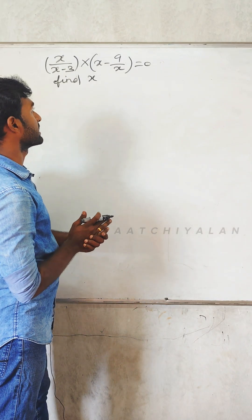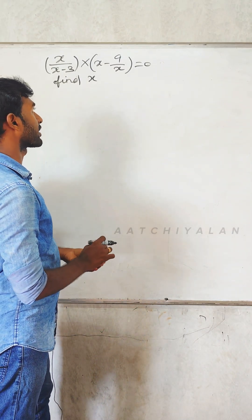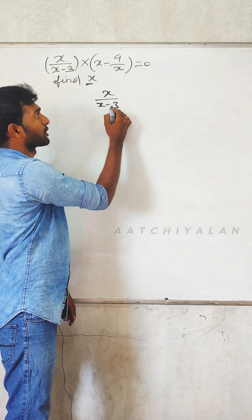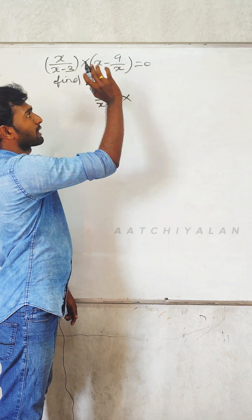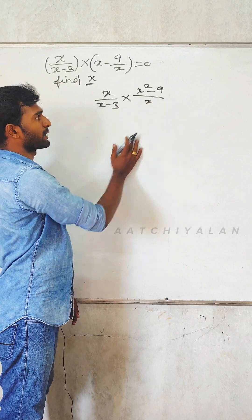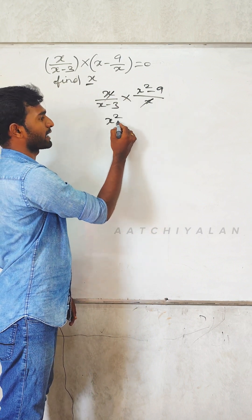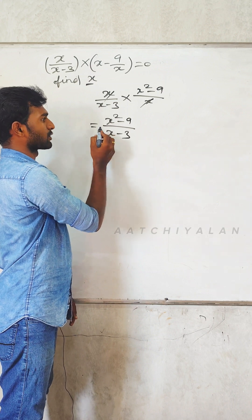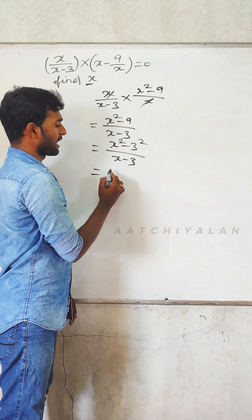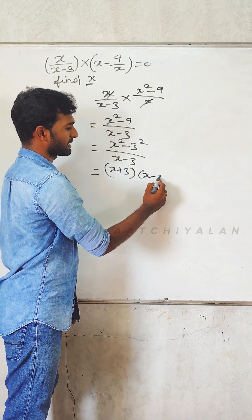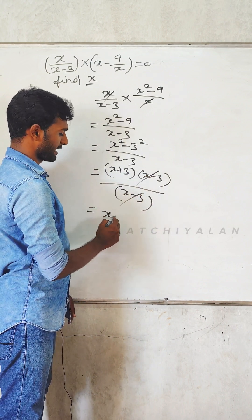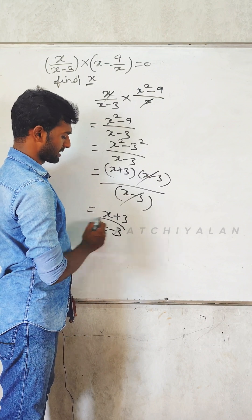x by (x minus 3) into (x minus 9) by x is equal to 0. Find x. x by x is equal to 0. So cross multiply: x² minus 9 by x is equal to 0. So x² minus 9 by (x minus 3) is equal to 0. x² minus 3² in the box. So x plus 3 equals x minus 3 by x minus 3 — x minus 3 cancel. So the answer is x plus 3; x value is minus 3.